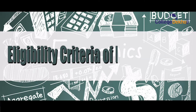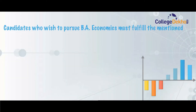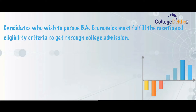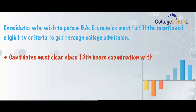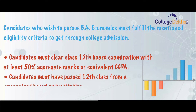Eligibility criteria for the BA Economics course: candidates who wish to pursue BA Economics must fulfill the mentioned eligibility criteria to get through college admission. Firstly, the candidate must clear the Class 12 board examination with at least 50% aggregate marks or equivalent CGPA. Secondly, the candidate must have passed Class 12 from a recognized board or institution.